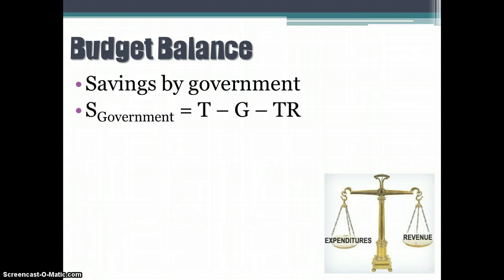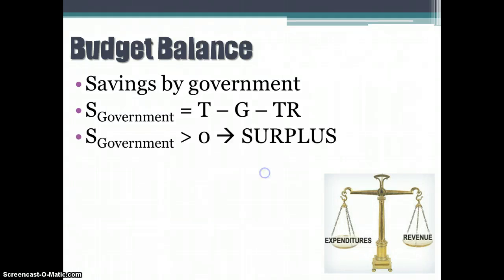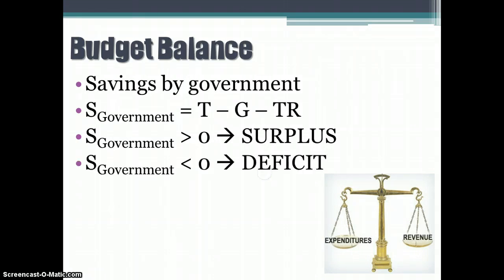We could look at it from an equation: the savings for the government equals the tax money brought in, minus government spending, minus transfer payments. If that number is greater than zero, there are more taxes than spending and we have a surplus. If it's less than zero, we had less tax coming in than spending going out and we have a deficit.